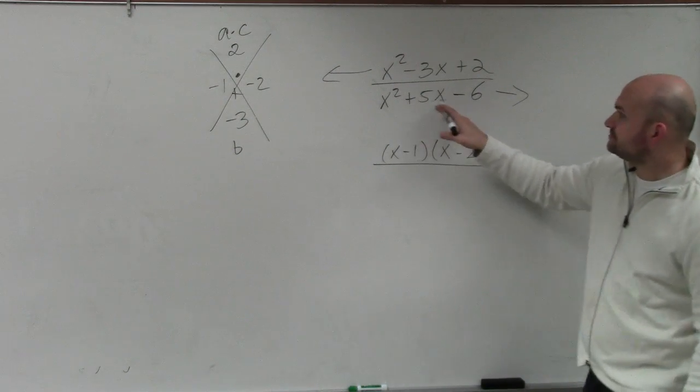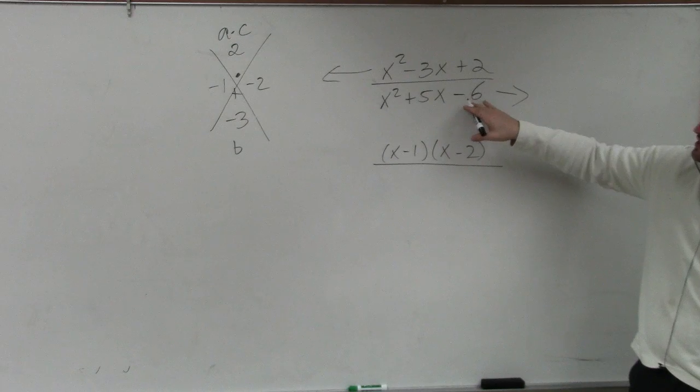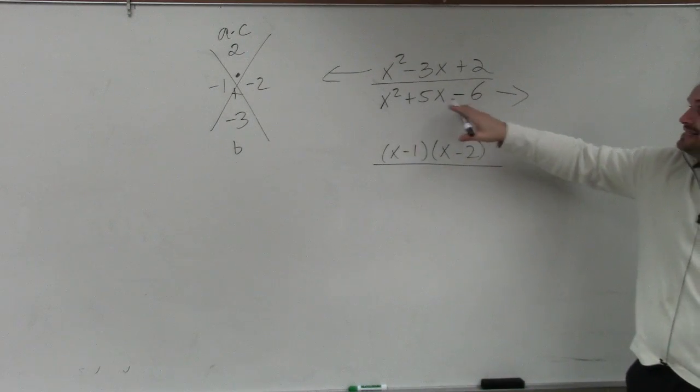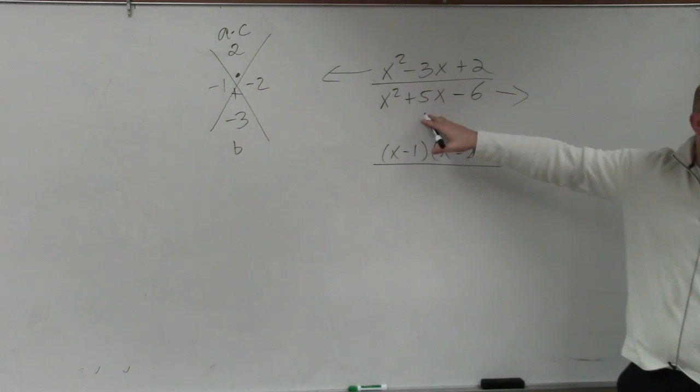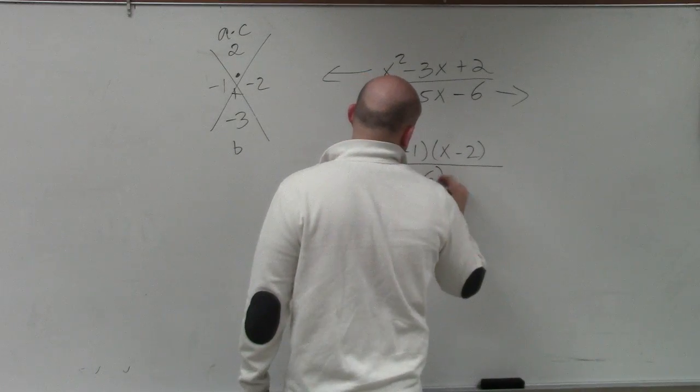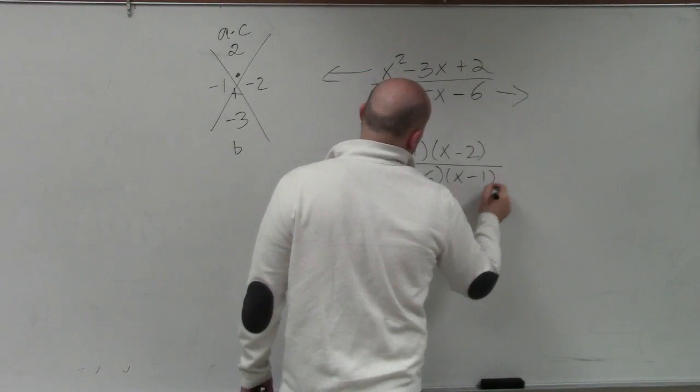if two numbers are multiplying to give me negative, one has to be negative, one has to be positive, right? And if they're adding to give me a positive, that means the larger of the factors has to be positive. So what I come up with is x plus 6 times x minus 1.